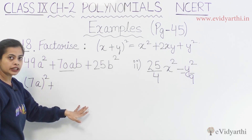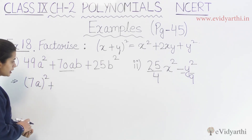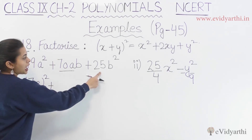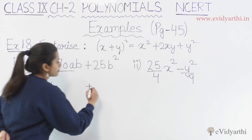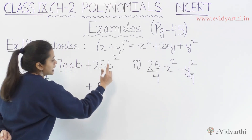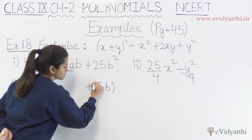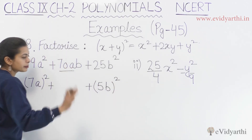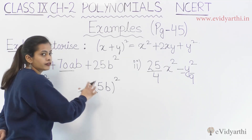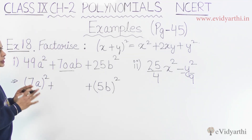Now let's look at the middle portion. What is the last term? This means 5 squared — it is the same. So the second term is equal to 5b.